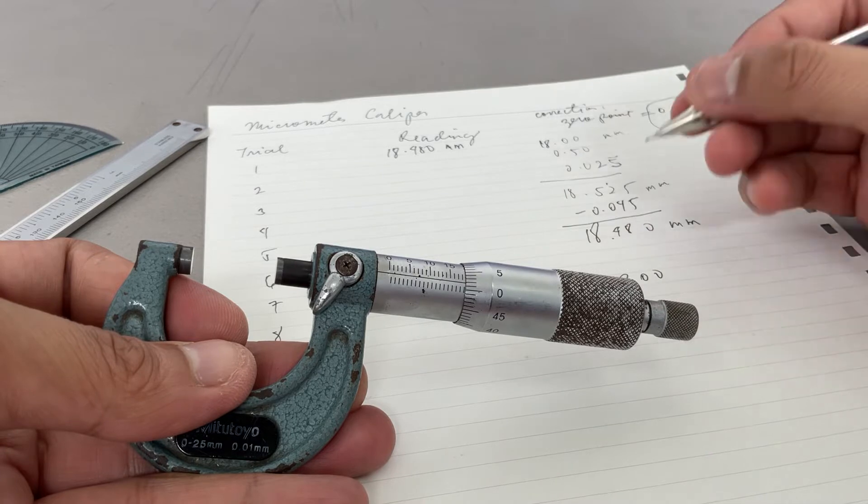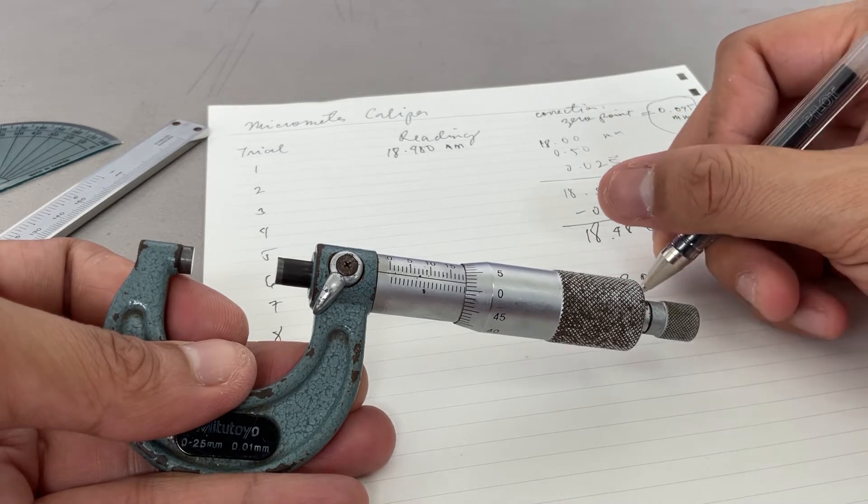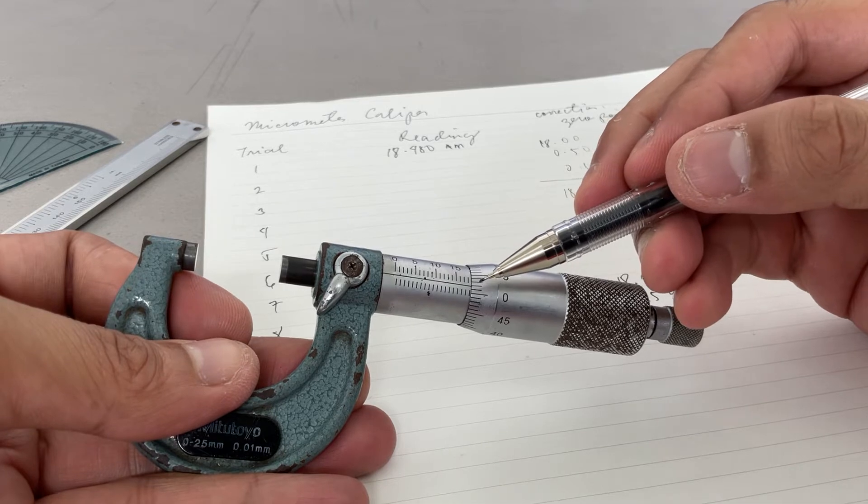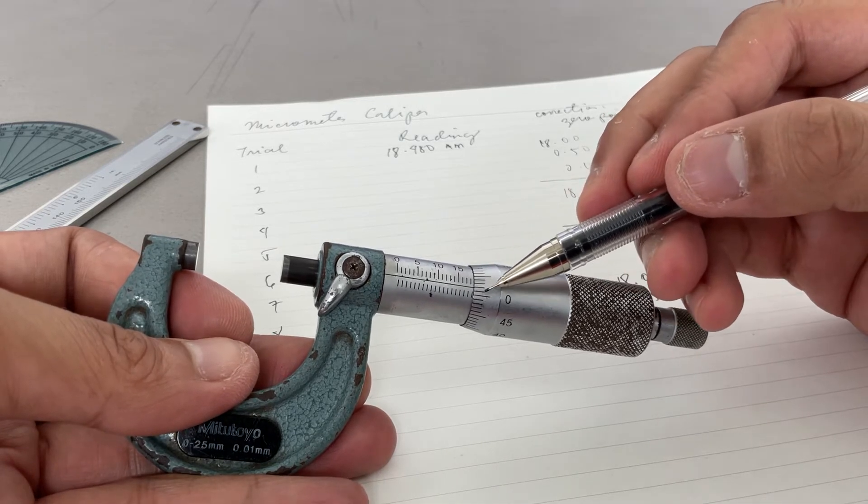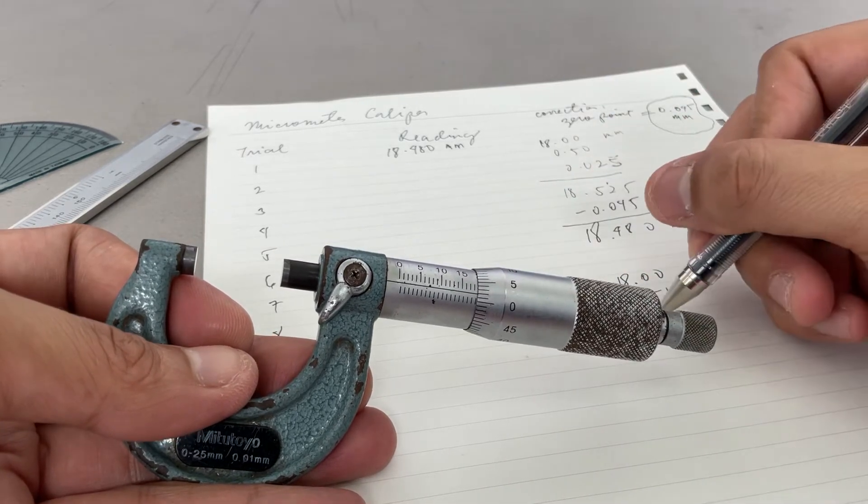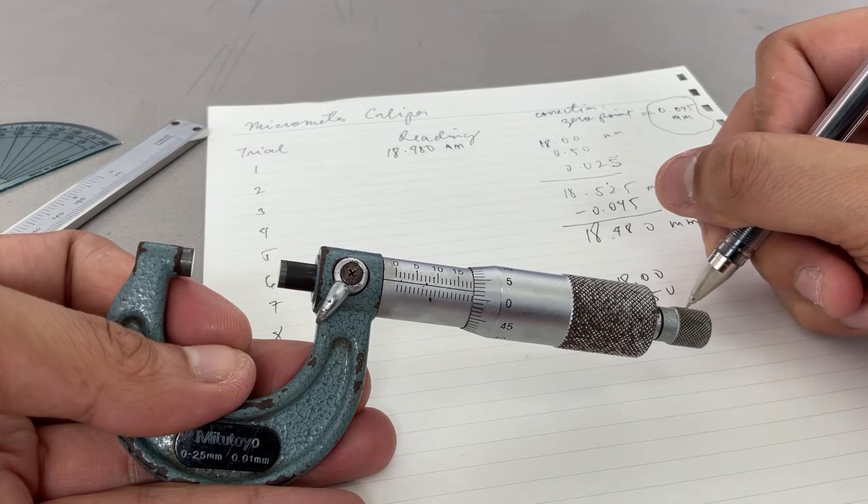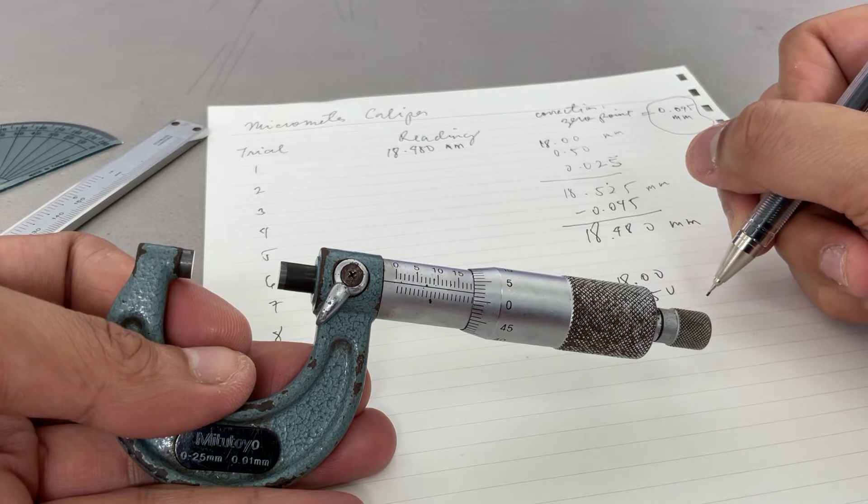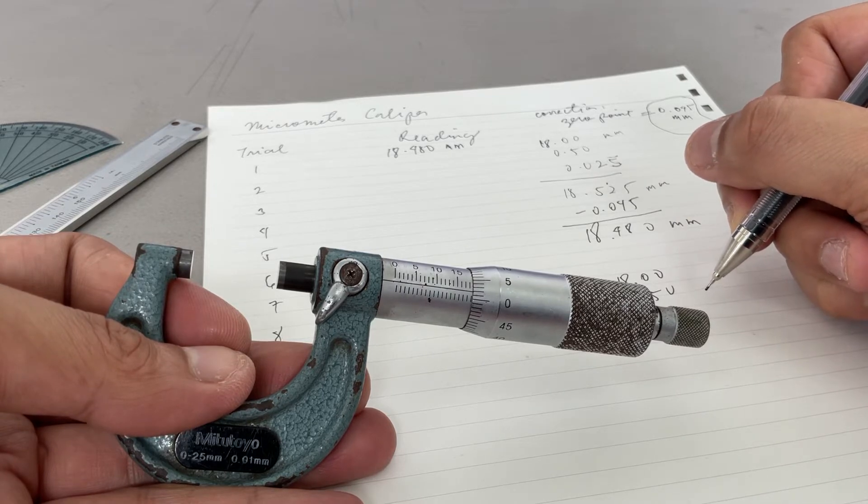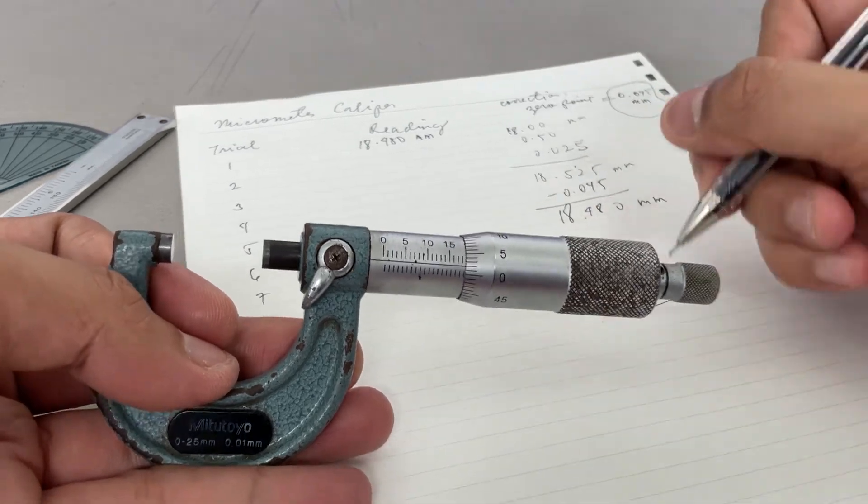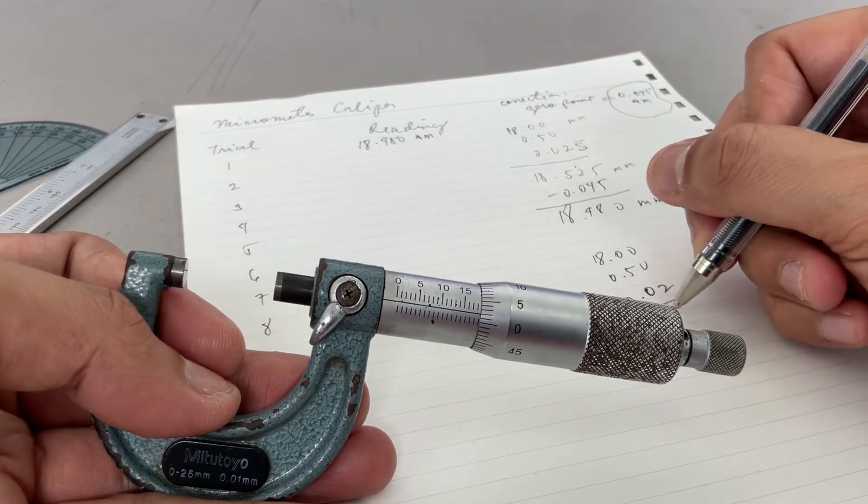You can see the half, so 0.50. And then which line perfectly coincides with the horizontal? One, two - more or less two - 0.02. So now our reading is 18.52.